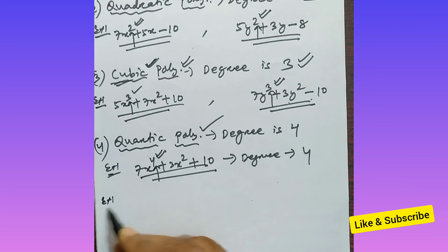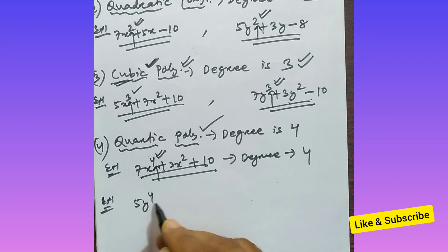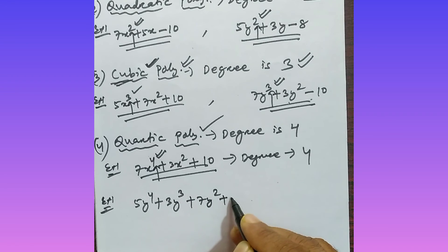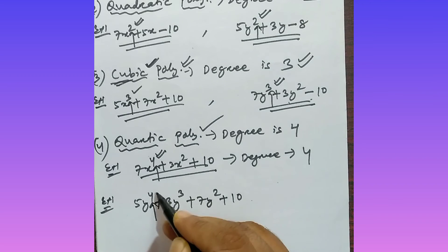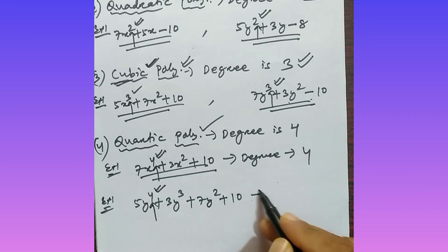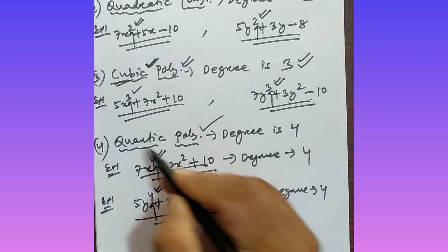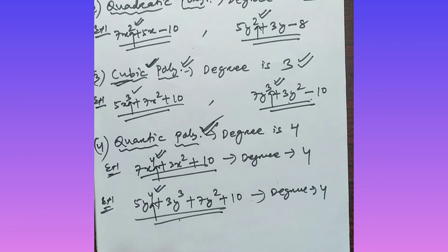One more example: 5y to the power 4 plus 3y cubed plus 7y squared plus 10. In this polynomial, the highest power of the variable is 4, so the degree is 4. As the degree is 4, this polynomial is called as quartic polynomial. In this way, these are the different types of polynomial based on degree.